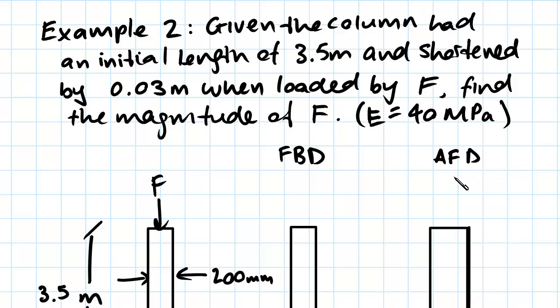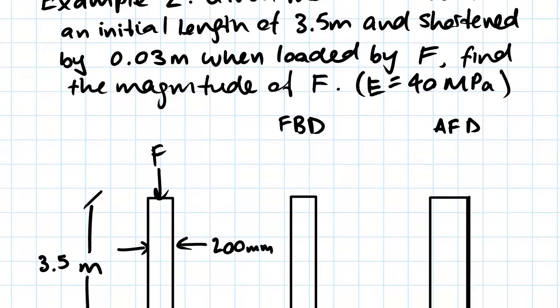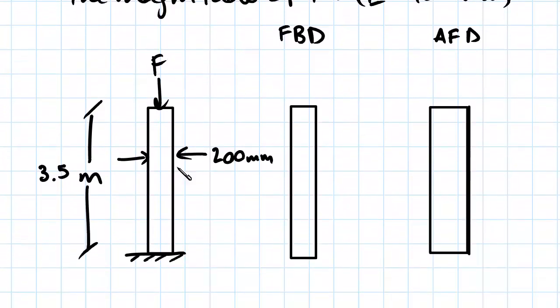So we go about this from a similar way that we did the last question, at least at the start. We'll start off by just looking at the problem. So we have a 3.5 meter column loaded with this point load F, and its diameter is 200 millimeters. So we start off by drawing our free body diagram.